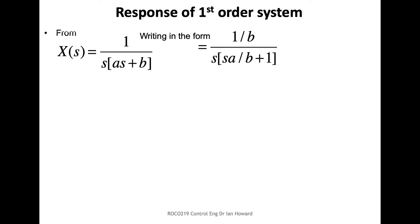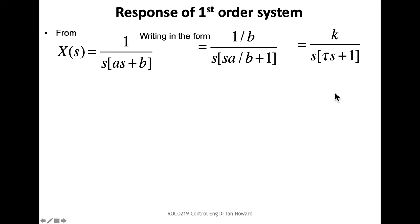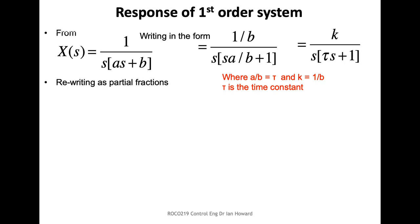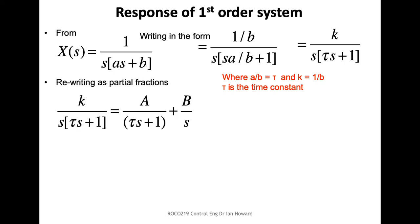We can rewrite this to explicitly introduce a time constant. Dividing through by b, we write the equation in the form k divided by s(tau*s + 1), where tau equals a/b is the time constant, and 1/b equals k is a gain constant.